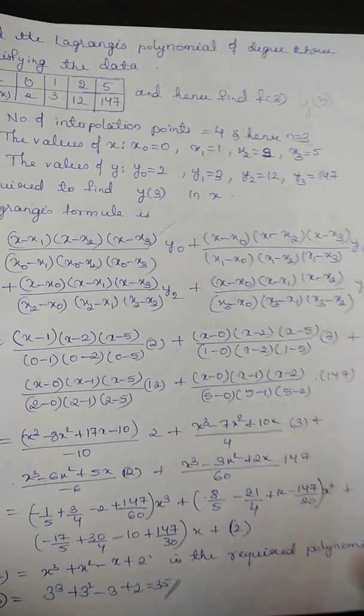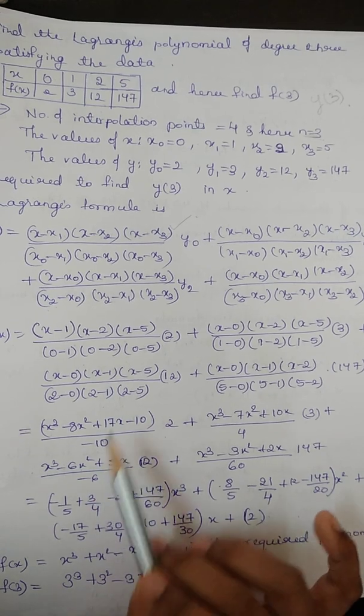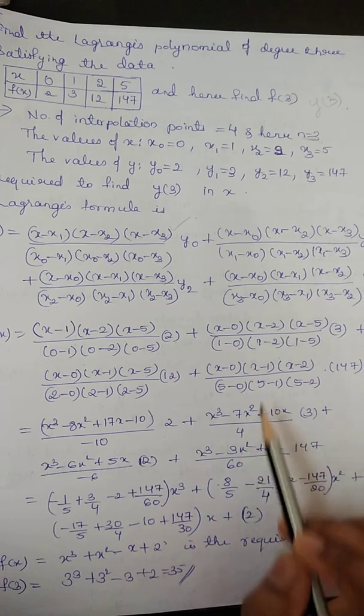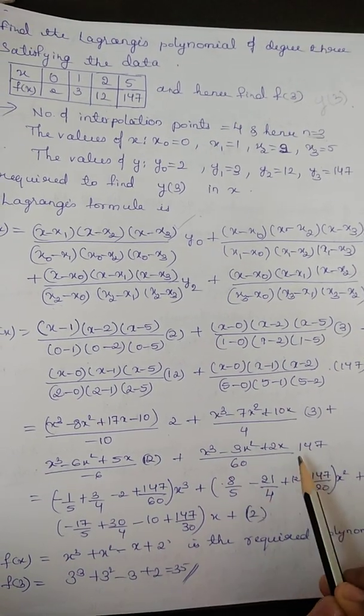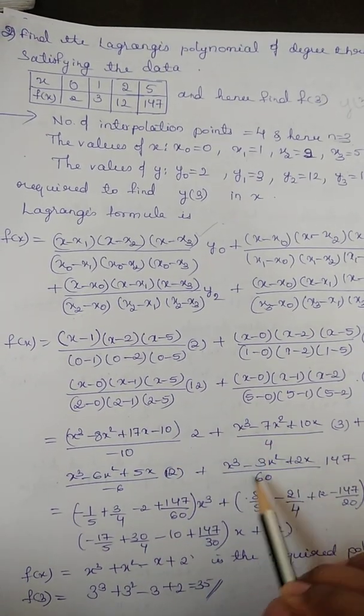Plus, again, when you multiply this, we will get x3 minus 7x square plus 9x upon 4. This 3 as it is. Plus, again this, x3 minus 3x square plus 5x upon minus 6, and 12. This x3 minus, when you open this bracket, minus 3x square plus 2x upon 6, 147.